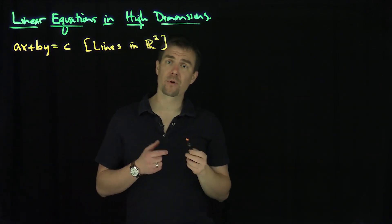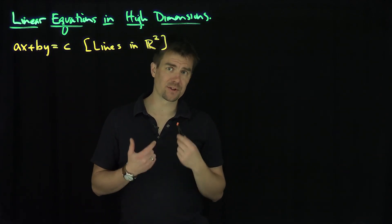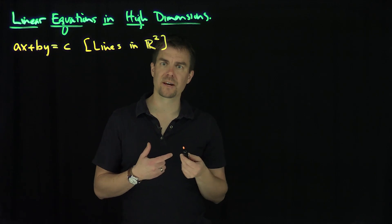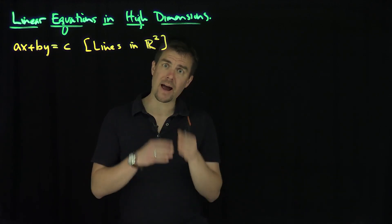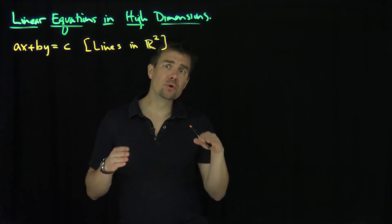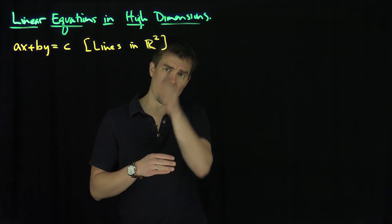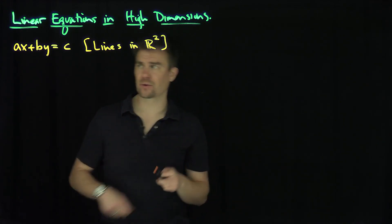When we plot lines, we plot ax plus by is equal to c. We know slope and intercept forms of these things. We always plot them on the xy-axis — that's two-dimensional space. I have an x-axis, a y-axis: two dimensions.